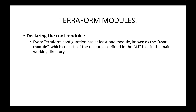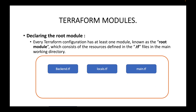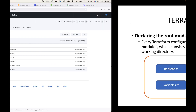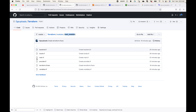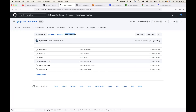Every Terraform configuration has at least one module known as the root module, which consists of the resources defined in the .tf files in the main working directory. We maintain one working directory, and within that working directory we have all the .tf files — such as backend.tf, locals.tf, main.tf, variables.tf, terraform.tf vars, and provider.tf — all within one single directory, which we call the root module.